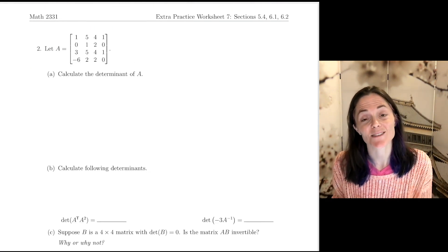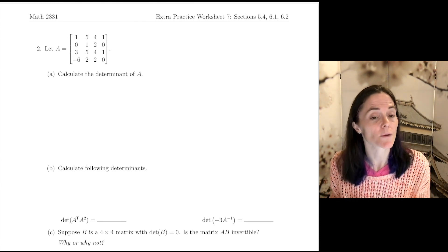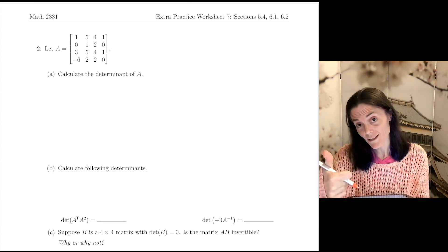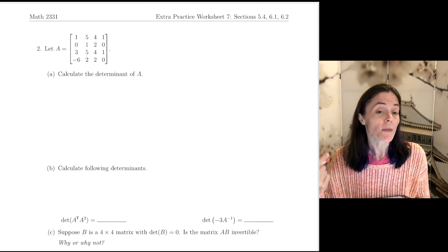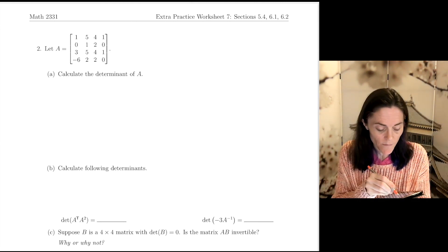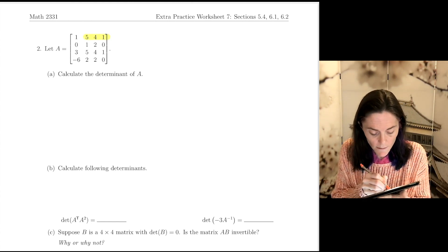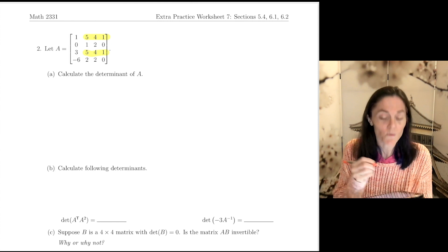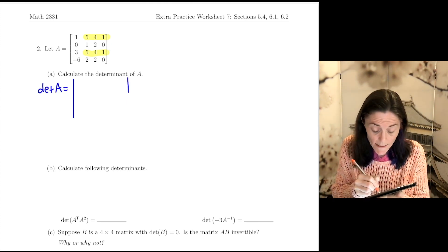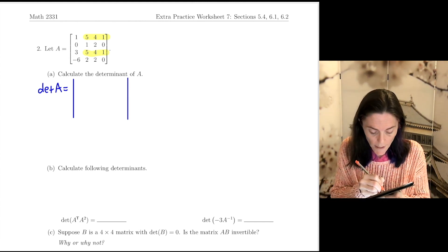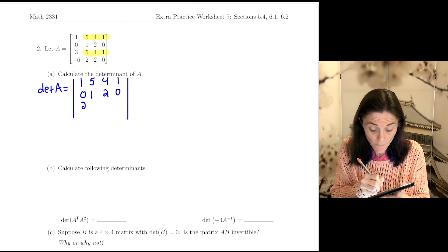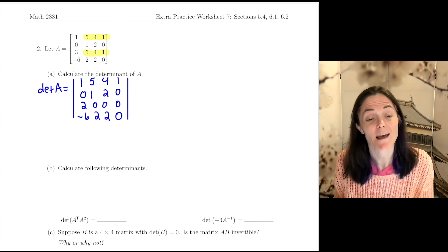Now we move on to determinants. This is from section 6.2 and 6.1. First, we're given a 4 by 4 matrix, find the determinant. And then we're asked some other questions about it. Now we need to be able to calculate determinants with cofactors and calculate determinants with row operations. You could just start doing cofactors here. However, I can simplify this as a first step because, you see, in the first row, in the third row, three of the entries are the same. So my very first step here, which will make my life a lot easier, is I can just say subtract row 1 from row 3. I will get this determinant. 1, 5, 4, 1, 0, 1, 2, 0. And then I will have 2, 0, 0, 0. And then the last one is negative 6, 2, 2, 0. That was doing one row operation.